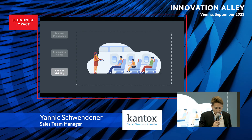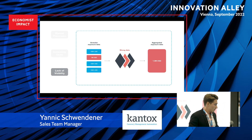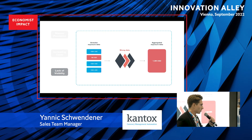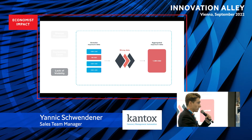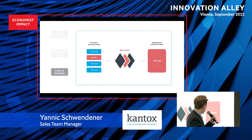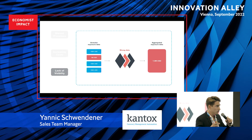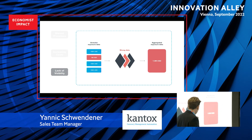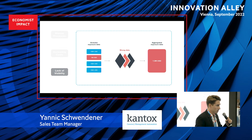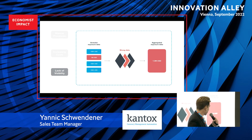Lack of visibility. What we typically see is that treasurers receive an aggregated amount of what they are supposed to hedge and they have a limited understanding of what actually belongs to that aggregated amount. So there is quite limited visibility between what finance is actually doing compared to what the underlying business is. This can create friction between finance and commercial, and can also create risks — because if an invoice is wrongly entered into the ERP system but treasurers take important financial decisions on the back of that data, this can lead to quite some losses.